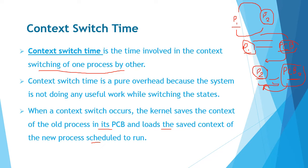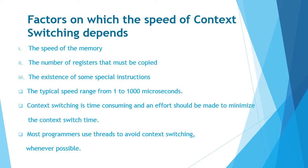During this duration when you switch these states, your CPU is not doing useful work — it is only switching states. That is why we call context switch time a pure overhead. We require context switching because you cannot switch from one process directly to another.